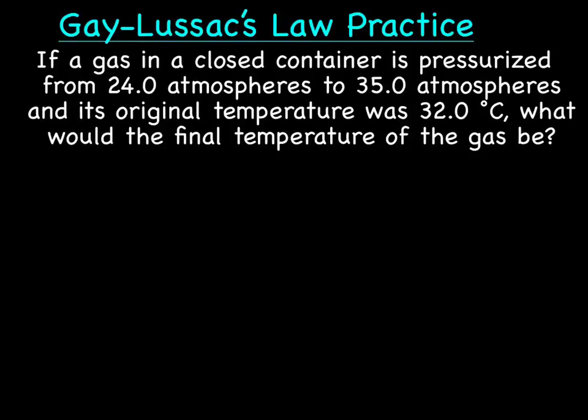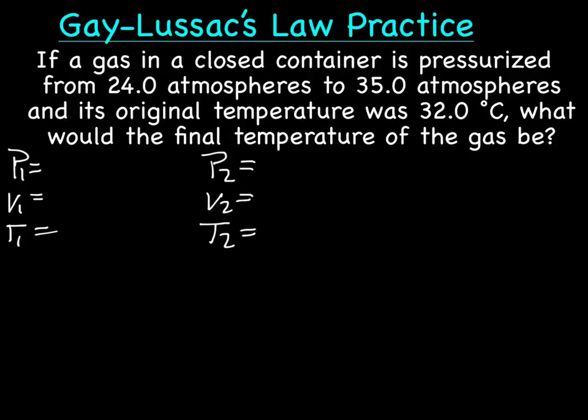Let's try a practice problem. Once again, write out your variables, possible variables. We have P1, V1, and T1, and P2, V2, and T2. Let me read through the story and see if we can figure out what goes with what. So if a gas in a closed container is pressurized from 24 atmospheres to 35 atmospheres, so it looks like our original pressure is 24 and our new pressure is going to be 35. And its original temperature was 32 degrees Celsius. What would the final temperature be?